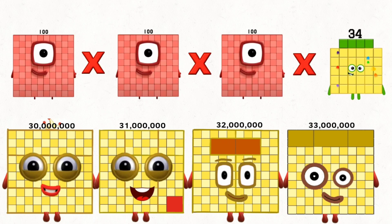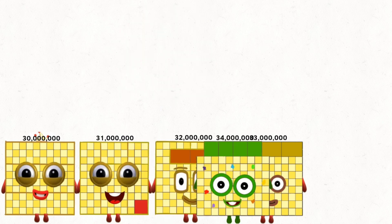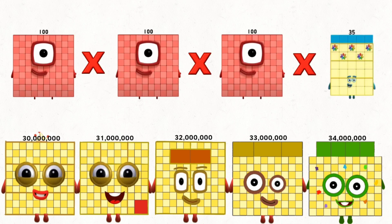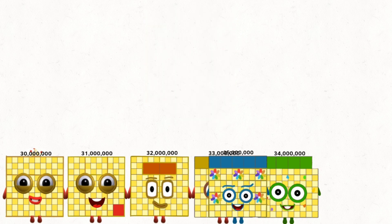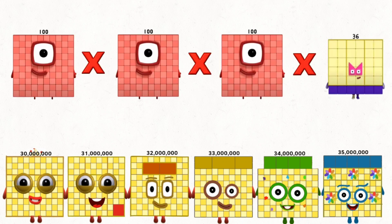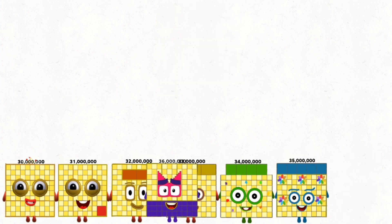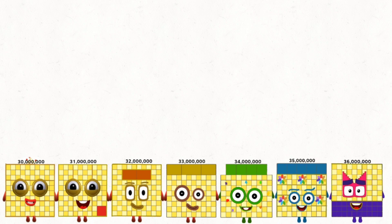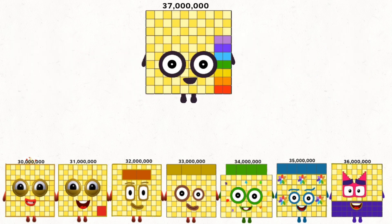100 times 100 times 100 times 34 equals 34 million. 100 times 100 times 100 times 35 equals 35 million. 100 times 100 times 36 equals 36 million. 100 times 100 times 37 equals 37 million.